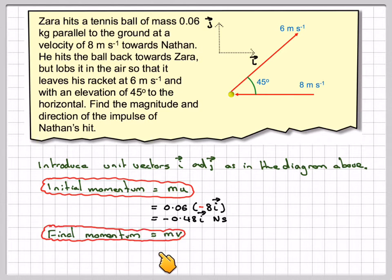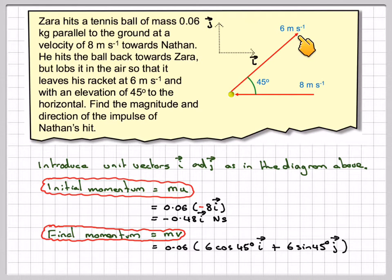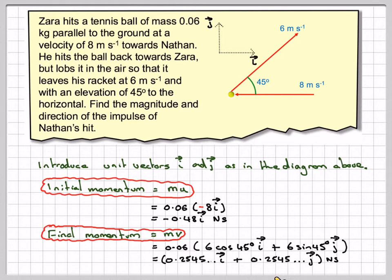The final momentum MV equals 0.06, split into components: 6 cos 45 in the i direction and 6 sin 45 in the j direction. That gives 0.2545i plus 0.2545j newton seconds.